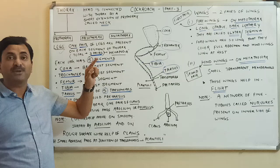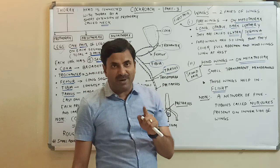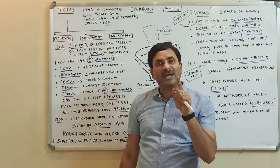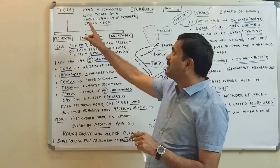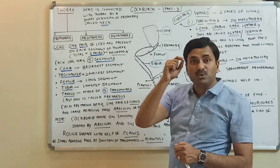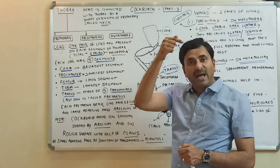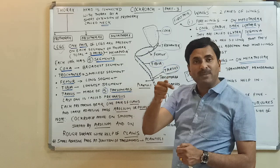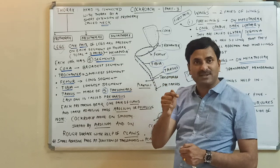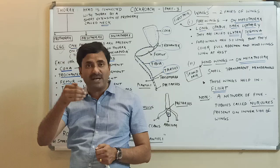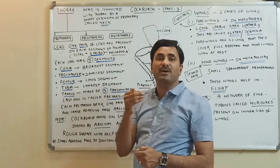Today we are going to discuss about the thorax part of the cockroach body. As we know, the cockroach body is divided into three parts: head, thorax, and abdomen. In the previous video we talked about the head part in detail. The head is connected to the thorax by a short extension of the prothorax, which is called the neck. Because of this neck, the cockroach can turn its head in all directions.